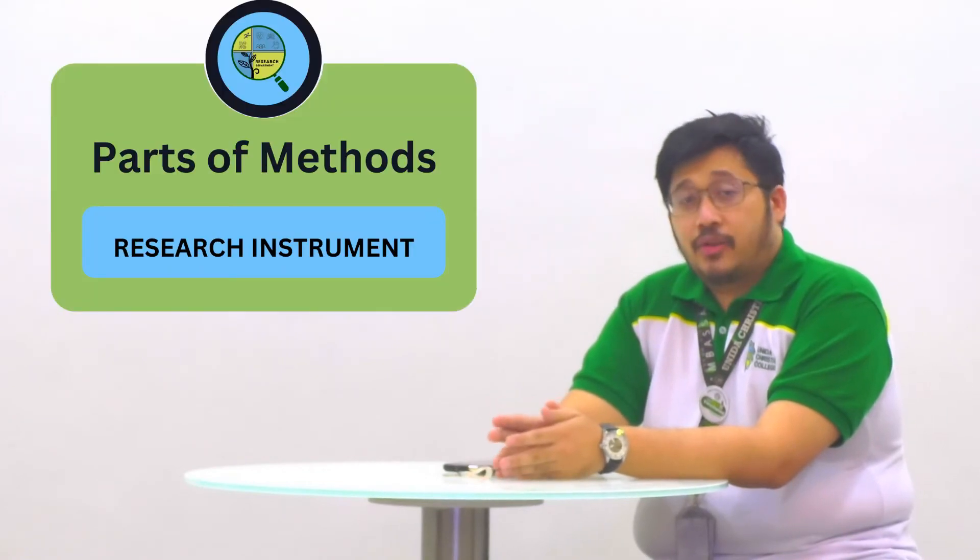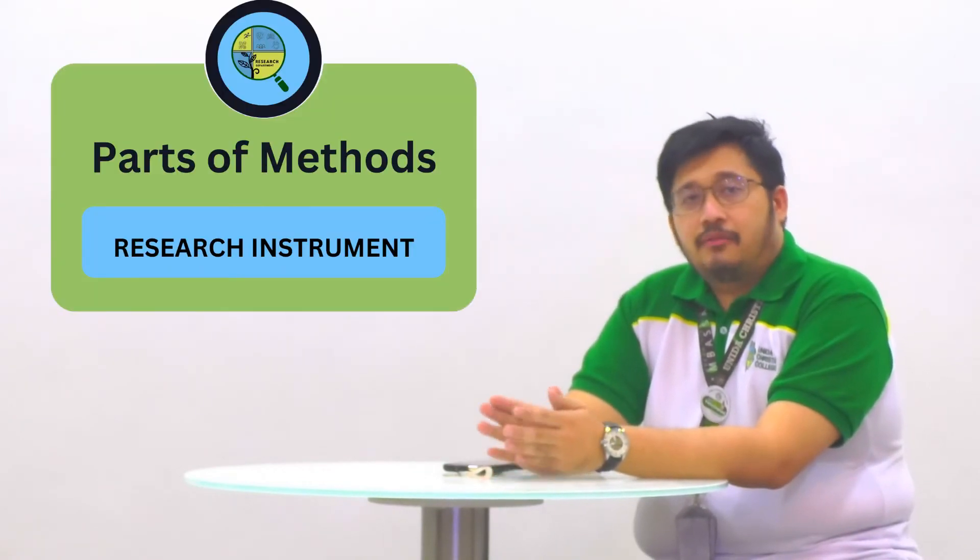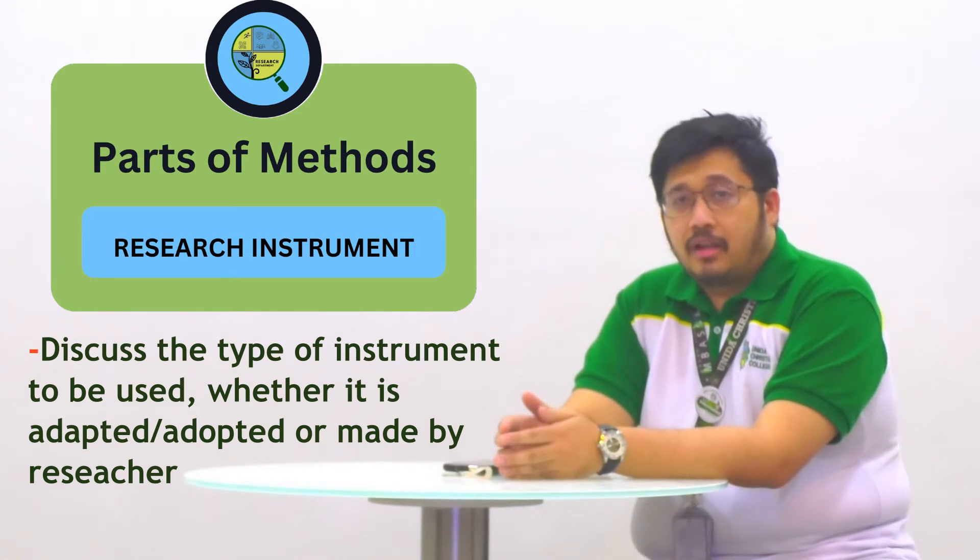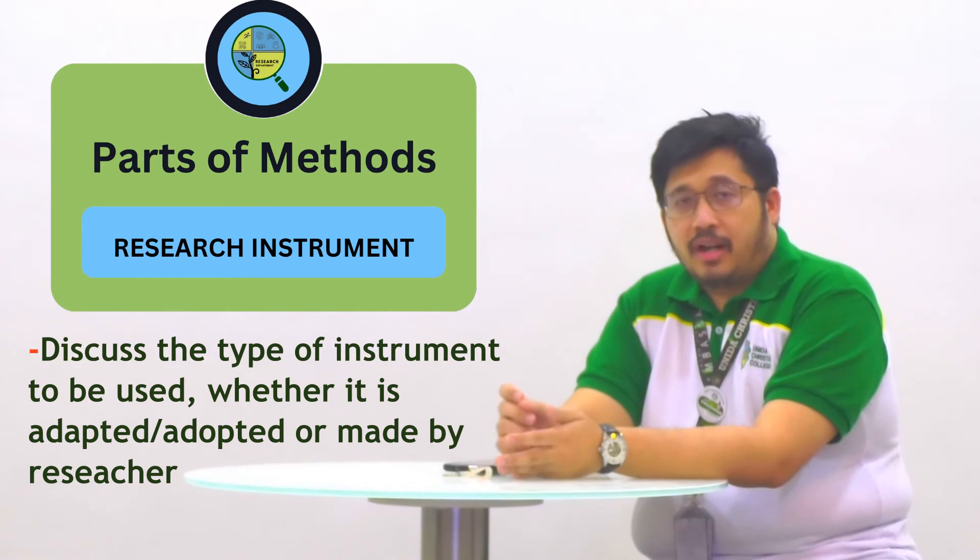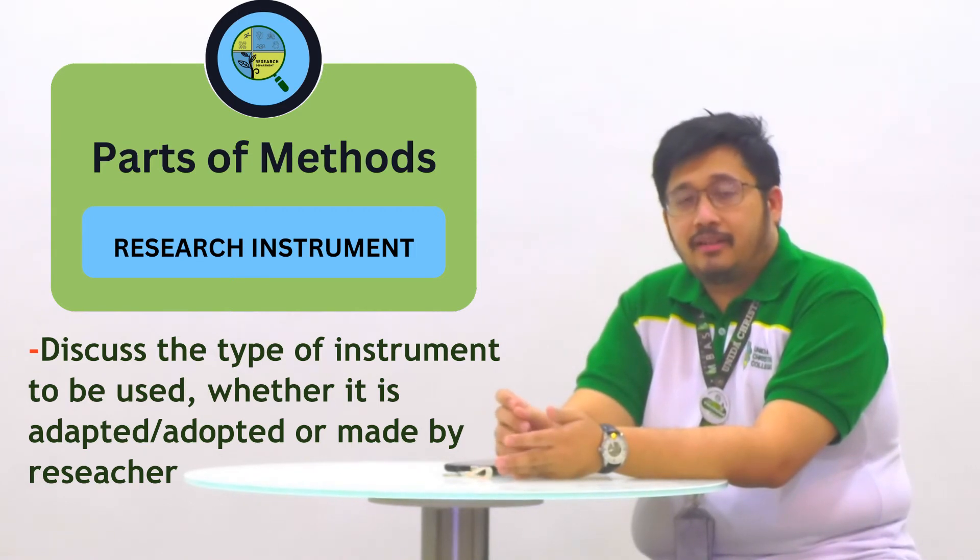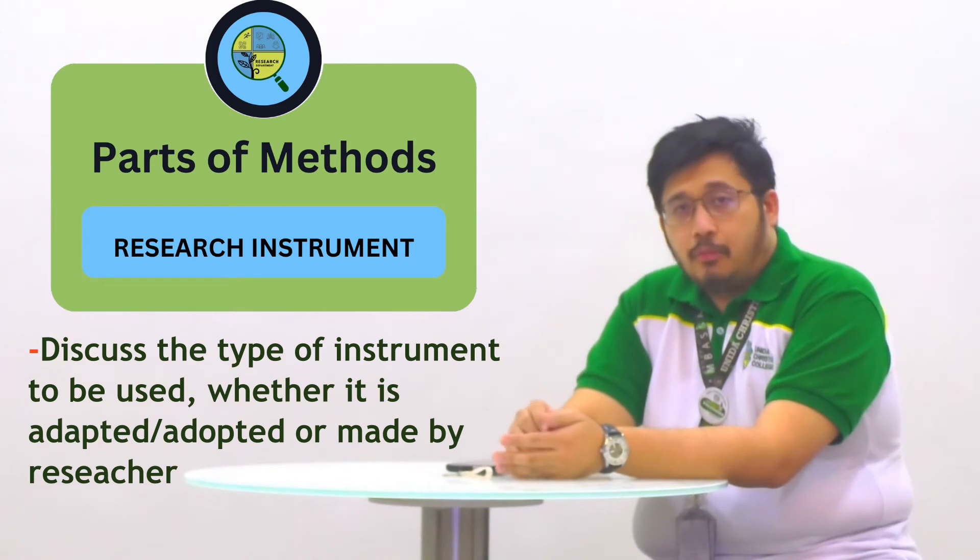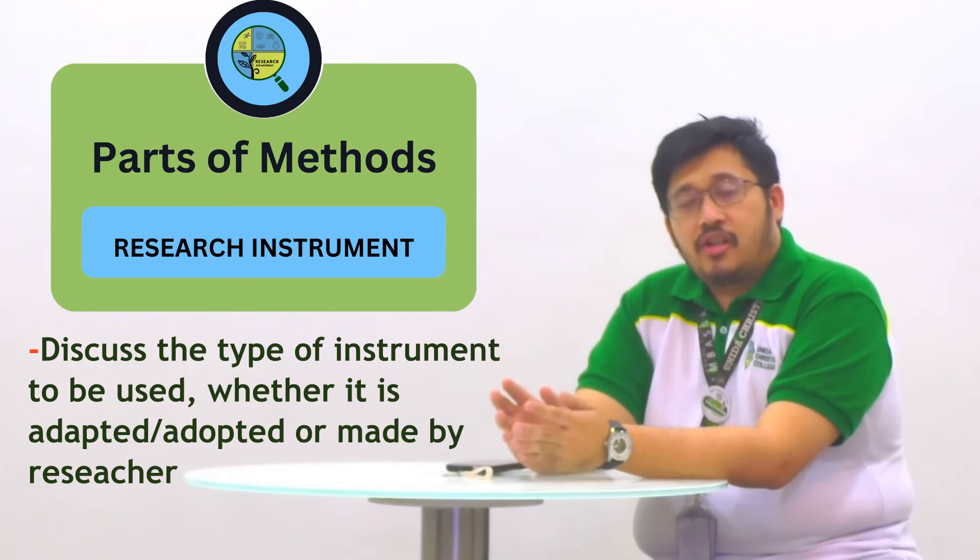That is followed by the research instrument. For this part, you have to discuss the components of your research instrument. What exactly would it contain? Will the respondent have to write his name on it? Does the respondent have to write his age, sex? If the instrument is divided into two parts, what are the components of part one? What are the components of part two? Everything that your research instrument contains, you have to discuss in that part.